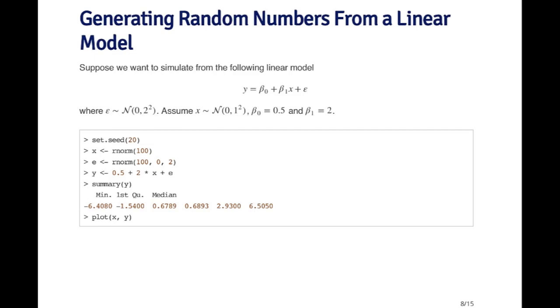So here at first, I set the seed. Remember, it's always very important to set that seed, so I set it to 20. I generate x, the predictor, which has a standard normal distribution. I generate epsilon, which has a normal distribution with mean 0 and standard deviation 2.